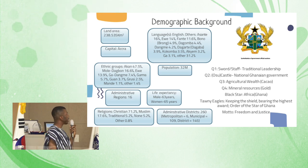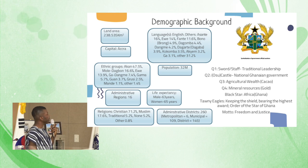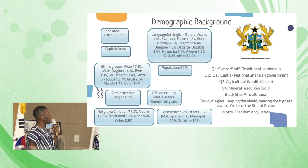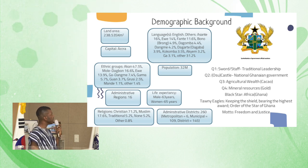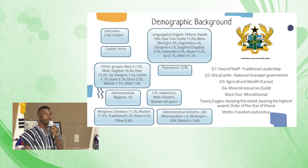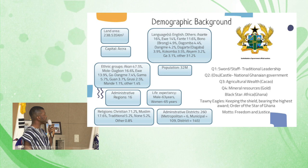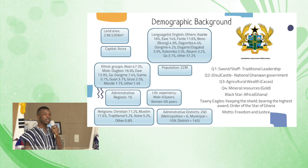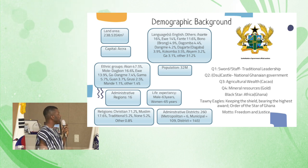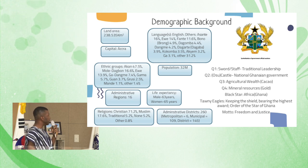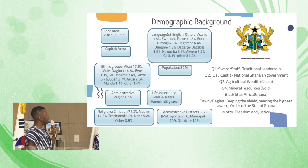We have some ethnic groups in Ghana whereby the Akans dominate. The number of administrative regions is 16 — initially it was 10 but in 2017 we added 6 more.